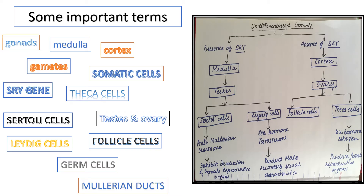Here is the main conclusion — a flowchart that summarizes how sex determination takes place in human beings. Before going through this summarized chart, you must know some important terms: what are gonads, gametes, medulla, cortex, somatic cells, germ cells, the difference between these two, the function of the SRY gene, and what are theca cells.